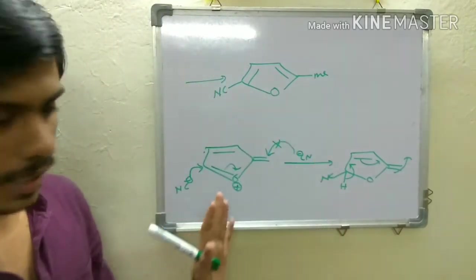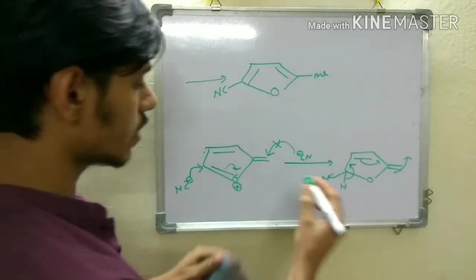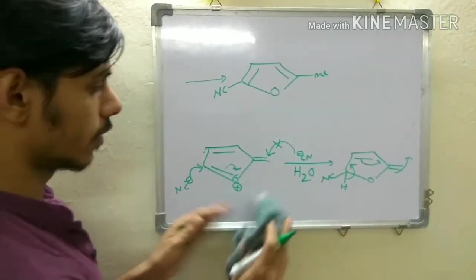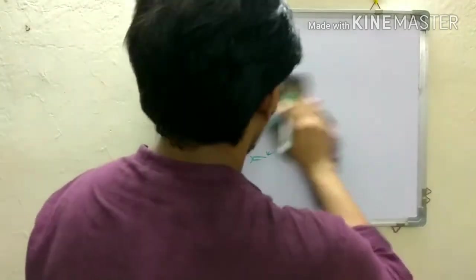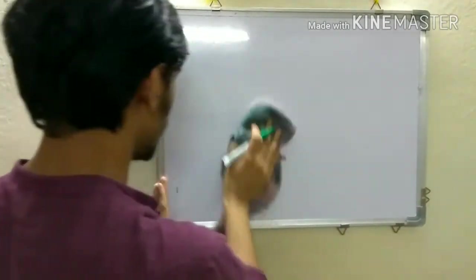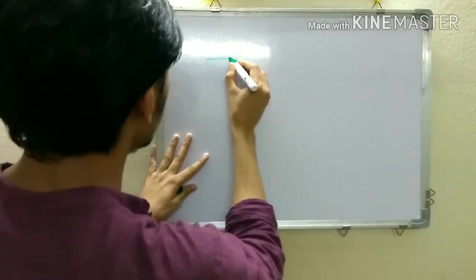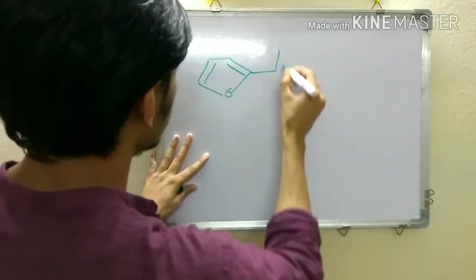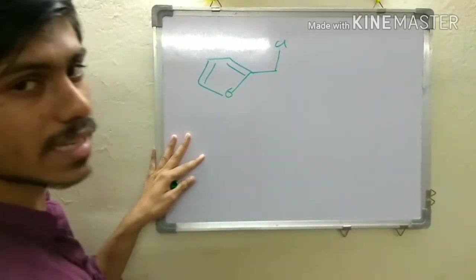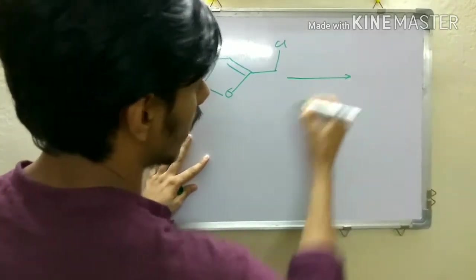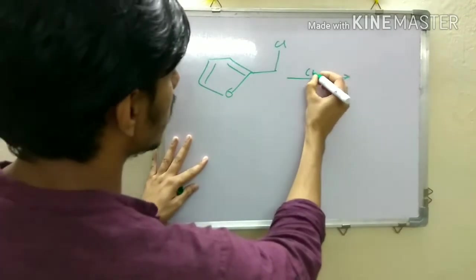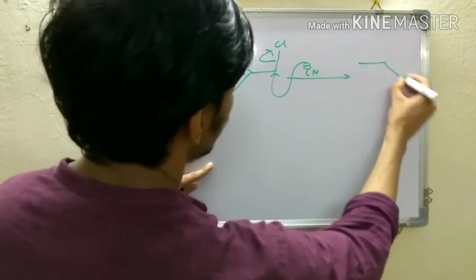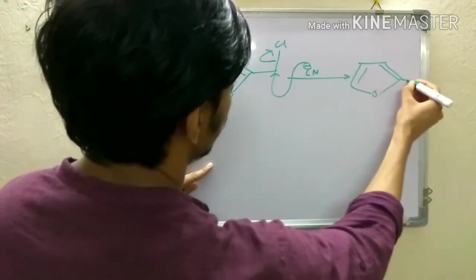To explain the second outcome in DMF or DMSO: in the previous case it was an SN1-type reaction because a carbocation was forming, whereas in DMF a direct SN2 attack gives this product.